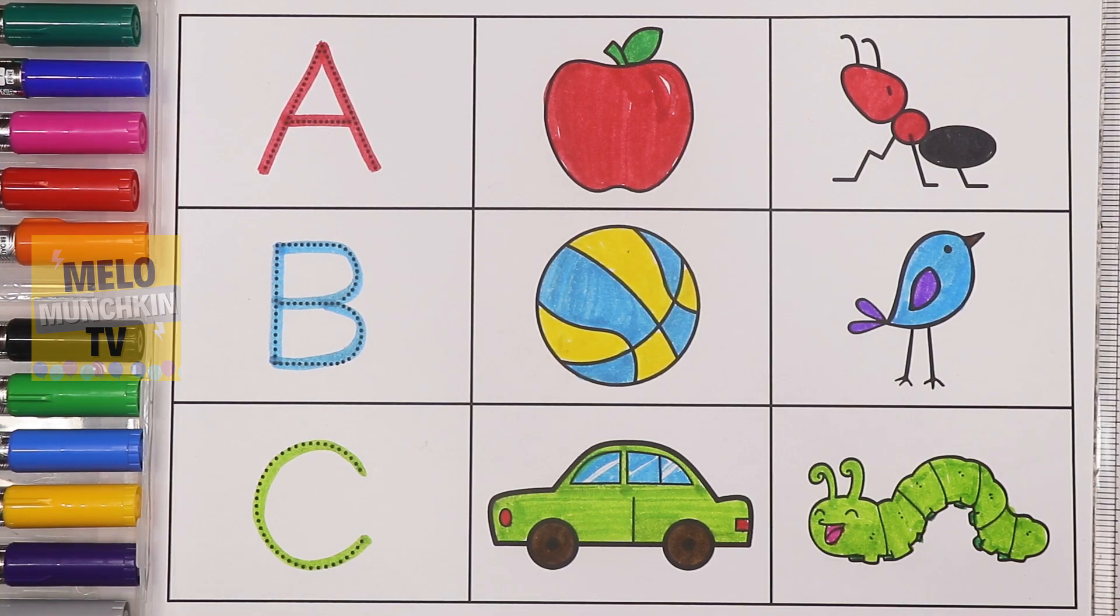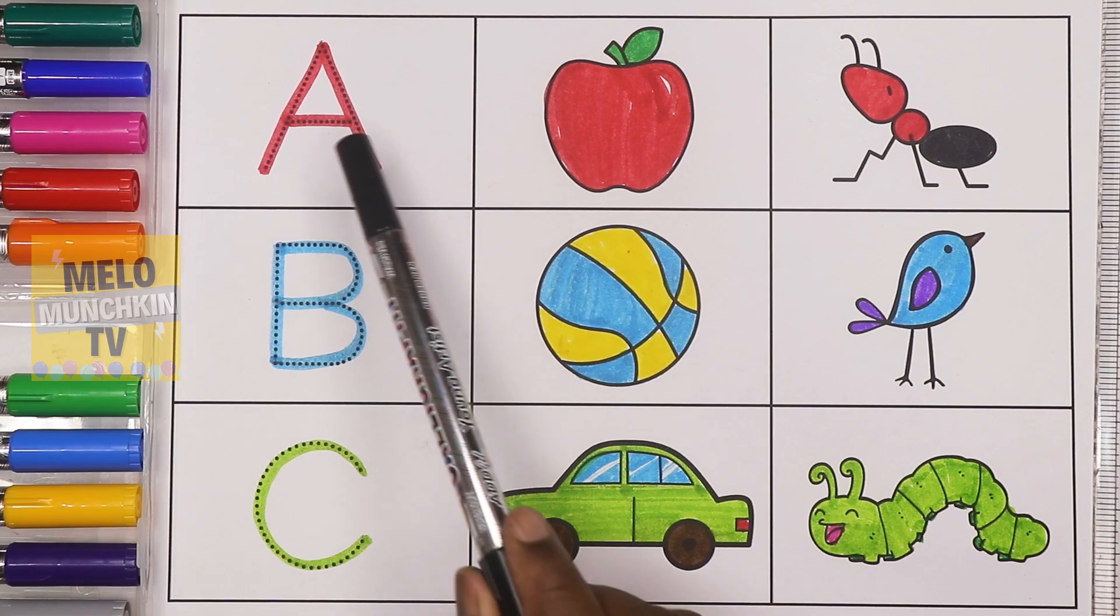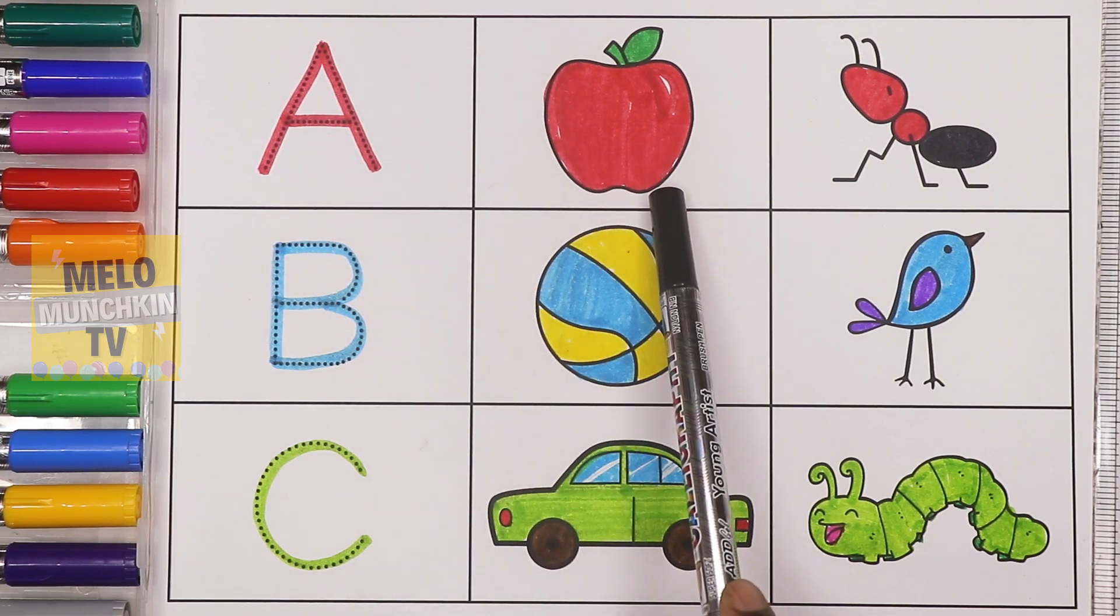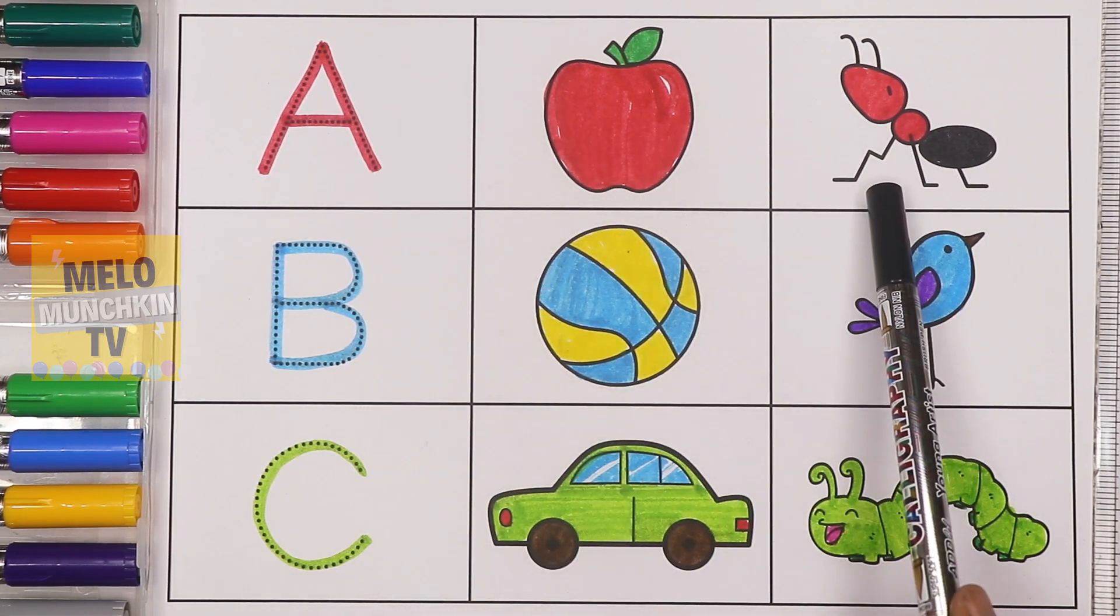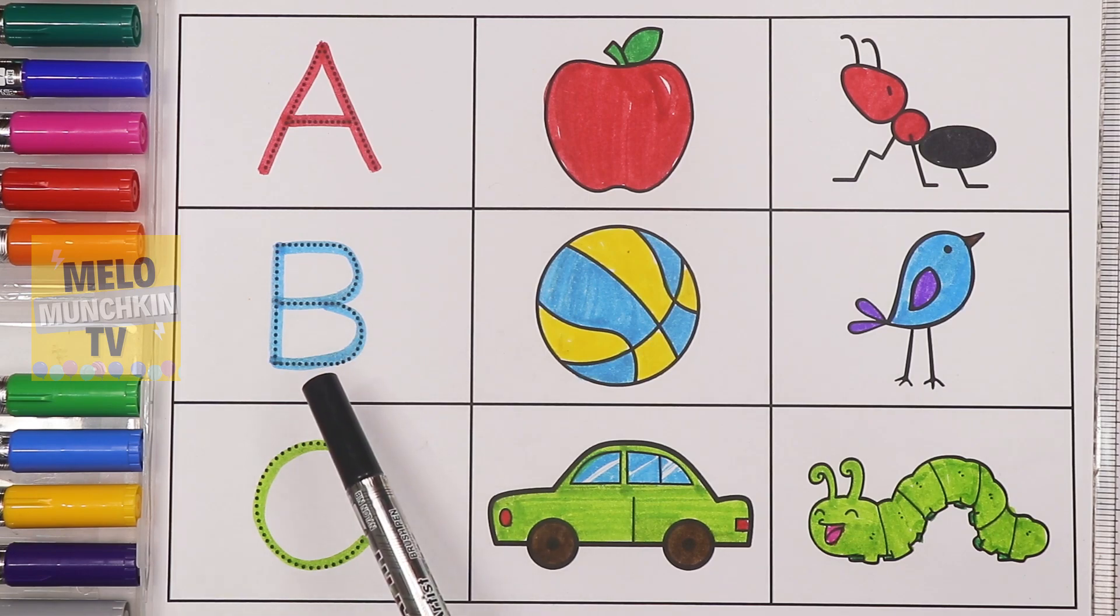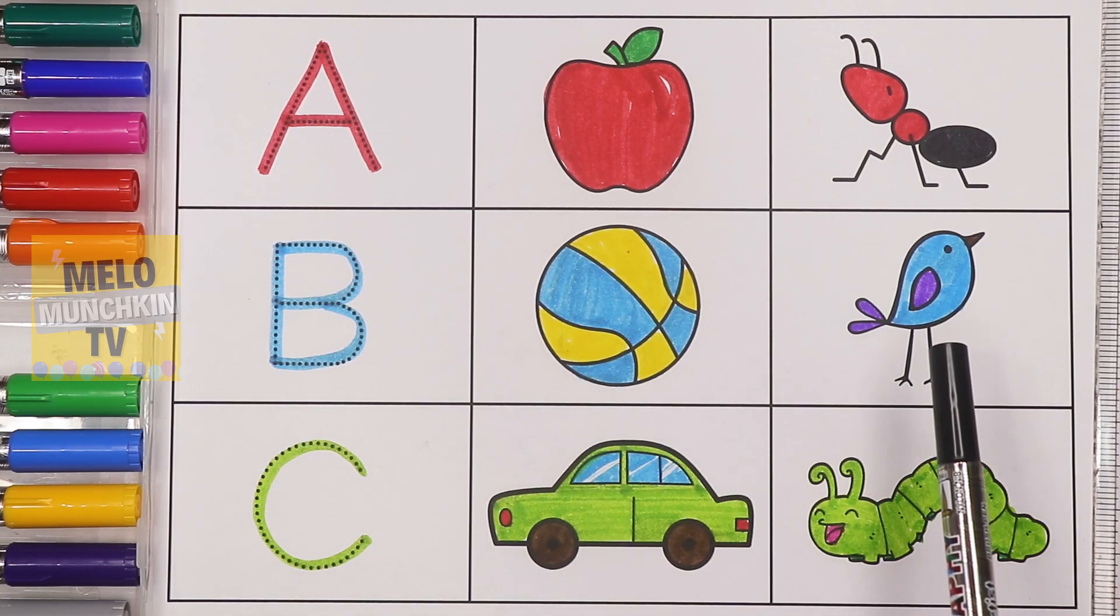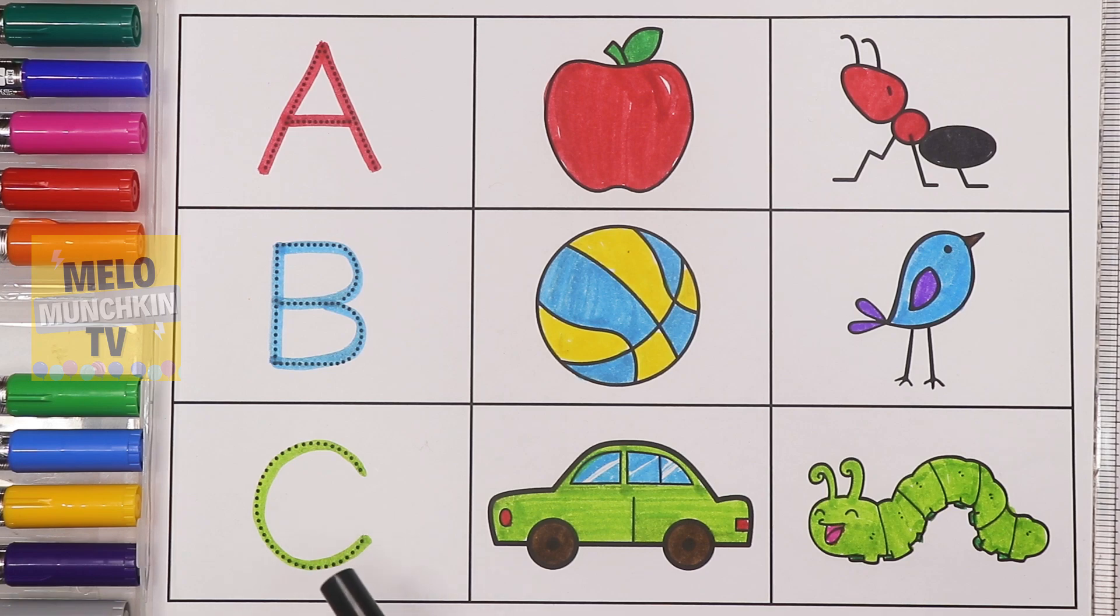So let's repeat once again. A, A for apple, A for ant, B for ball, B for bird, C for car, C for caterpillar. So hence we have completed our alphabets and the objects starting with these letters A, B and C.